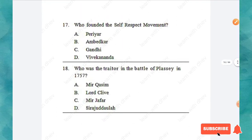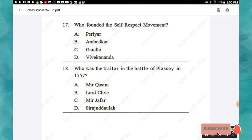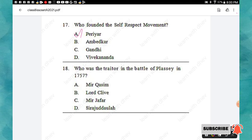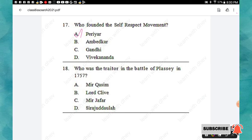Question 17: Who founded the Self-Respect Movement? Options: Periyar, Ambedkar, Gandhi, Vivekananda. The right answer is option A: Periyar. Question 18: Who was the traitor in the Battle of Plassey in 1757? Options: Mir Kasim, Lord Clive, Mir Jafar, Siraj-ud-Daula. The right answer is option C: Mir Jafar.